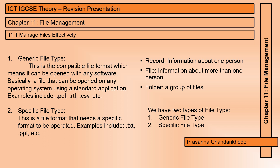Before we get started, we must know what a record, file, and folder are. Basically, a record is information about one person, a file is information about more than one person, and a folder is a group of files. We have two types of file types: generic file type and specific file type.